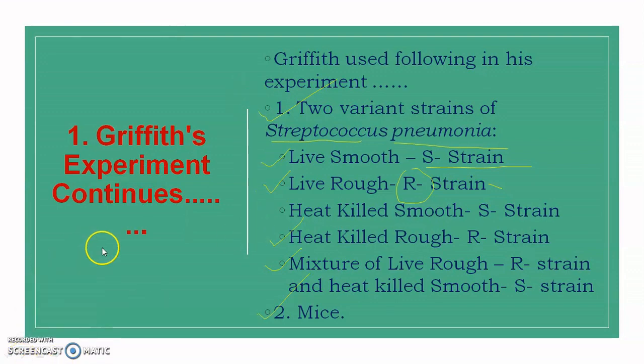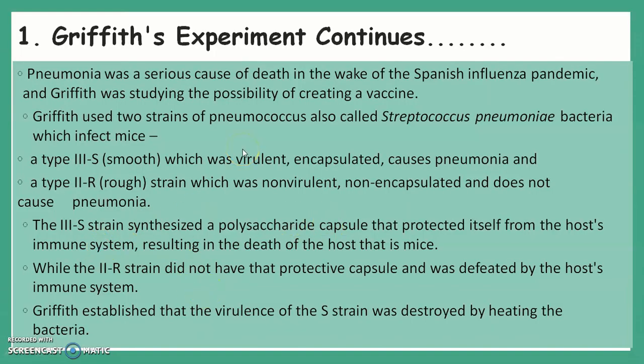All of you know that pneumonia is a respiratory disease and a serious cause of death in the wake of the 1918–1920 Spanish influenza pandemic. At that time, Griffith was studying the possibility of creating a vaccine to stop the spread of this pandemic. He used two strains of Streptococcus pneumoniae which infect mice.